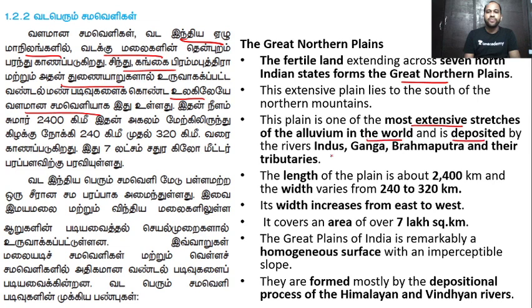Those are tributaries. Now, the Indus tributaries are named: Jhelum, Chenab, Ravi, Beas, Sutlej, and Ajita.